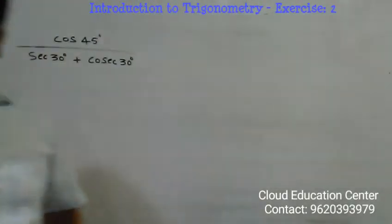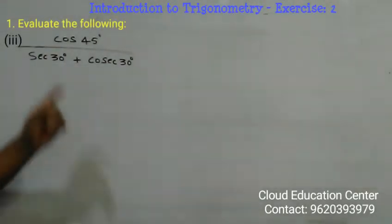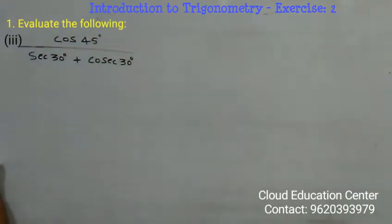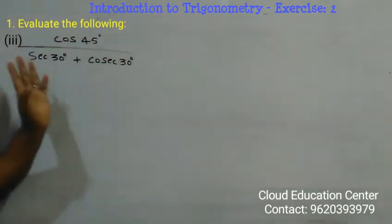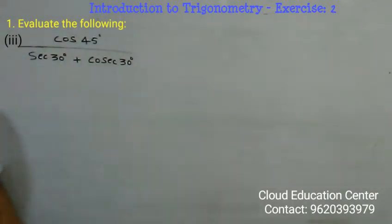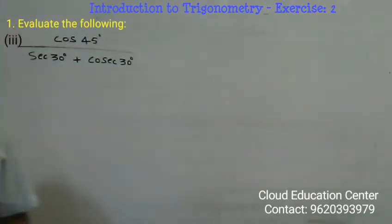Dear students, the question they asked is cos 45 degree divided by secant 30 degree plus cosecant 30 degree. So we have to find that value.